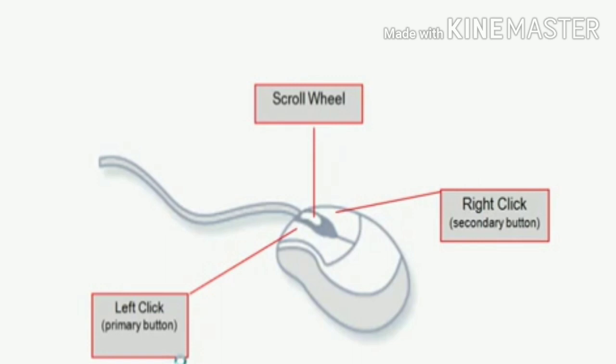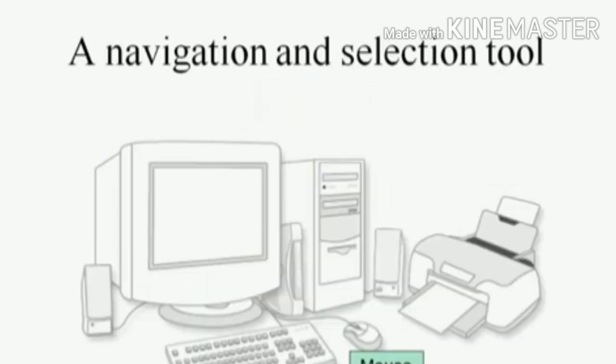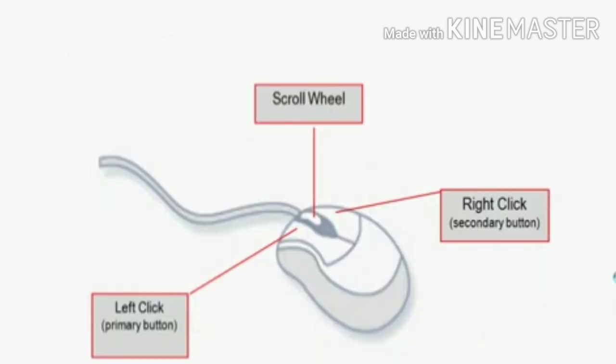The mouse is the other main way you have of telling the computer what to do. As we stated earlier, the mouse is a navigation and selection tool — along with the keyboard, it's one of the two ways you tell your computer what to do. The mouse is usually connected with a wire to the computer, although wireless mice are becoming more and more common. When it's pointed the right direction — the side facing away from you toward the computer — it has two buttons, one on the left side and one on the right side. These are usually large areas, not small buttons, on the mouse.